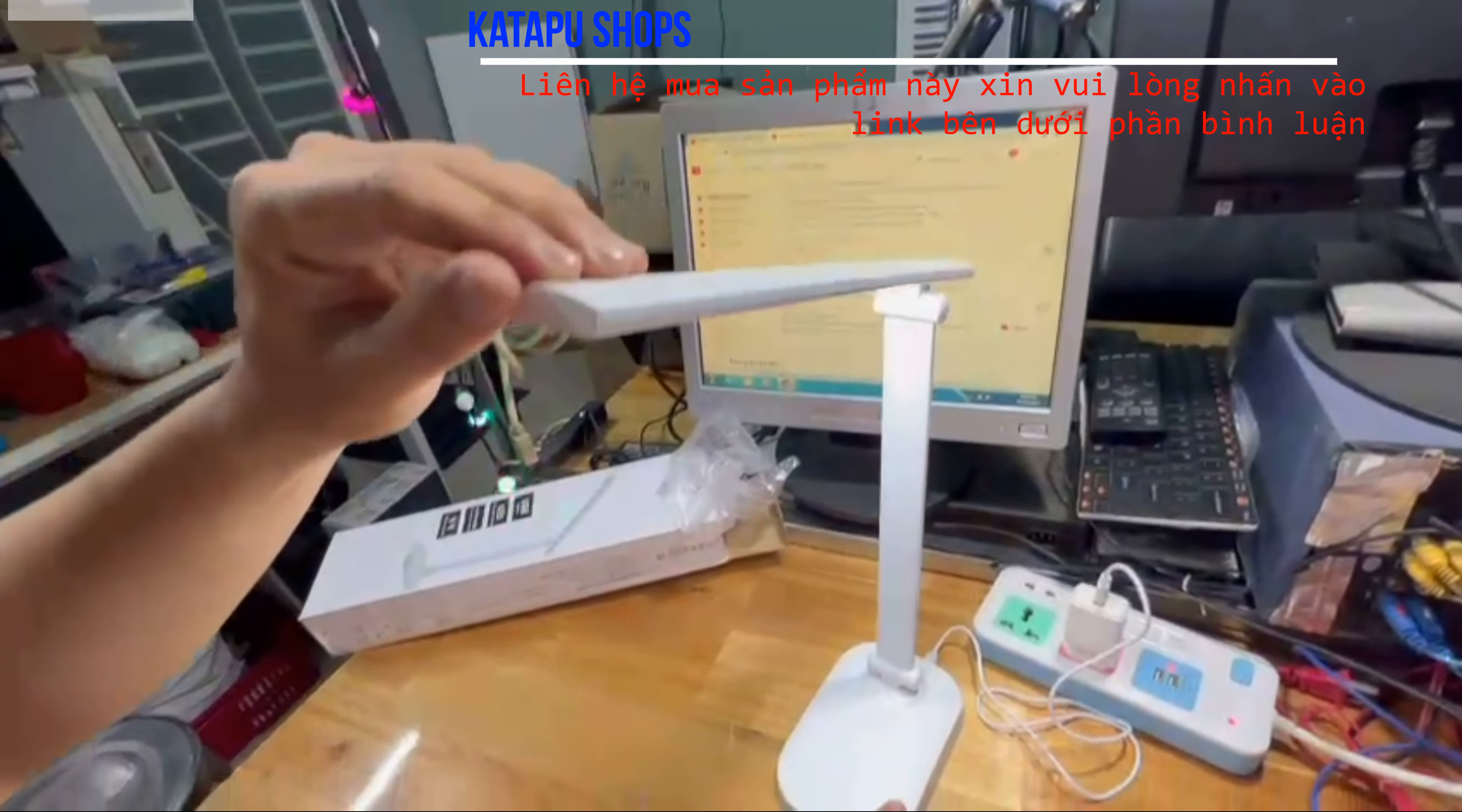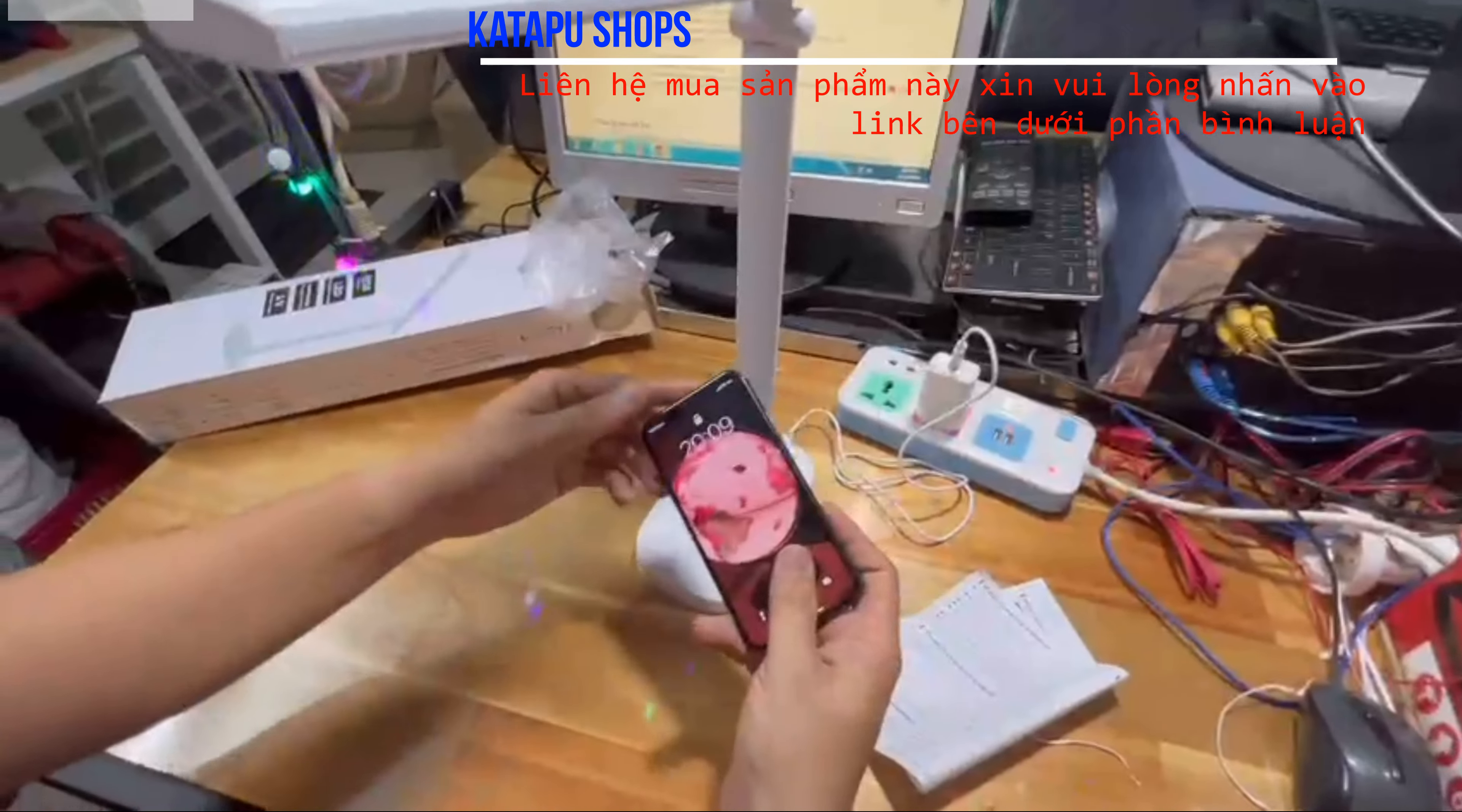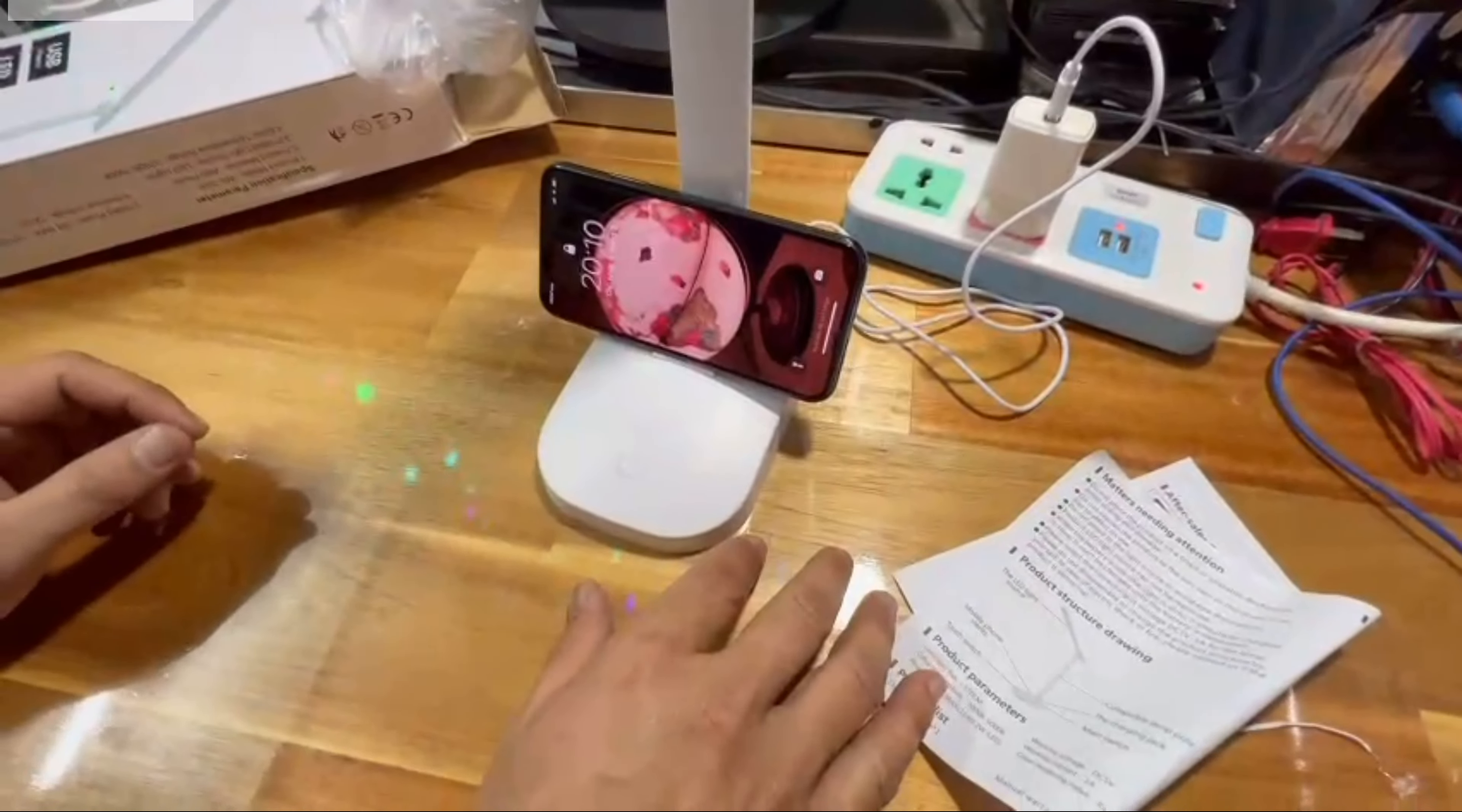Ở đây người ta có thiết kế thêm một chỗ, chỗ này mình sẽ để điện thoại lên. Nếu trẻ em học online thì mình có thể để điện thoại lên đây để nó có thể học, để đứng. Chỗ này để chặn lại thì học được thích hợp.